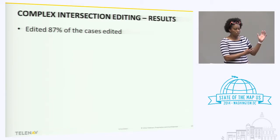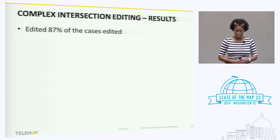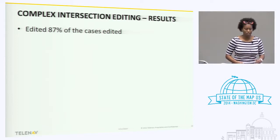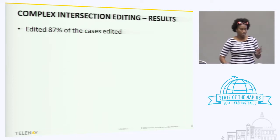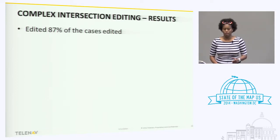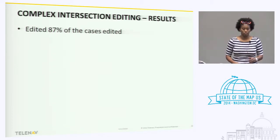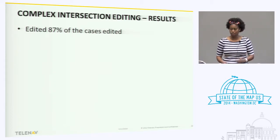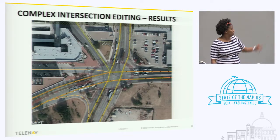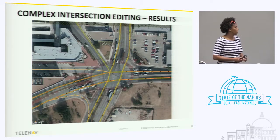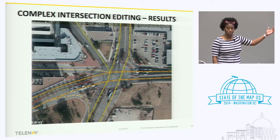We did 86 to 87% of the cases that we identified within the OSM++ errors with the complex intersections. And this is basically the outcome of the data editing.